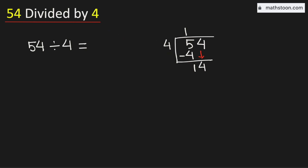Now 4 times 3 is 12. Subtract, we get 2. Now 2 is less than 4, but we have no number to bring down here. So in this case we will borrow 10 and for that we need to put a decimal here.